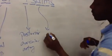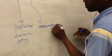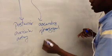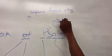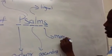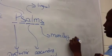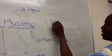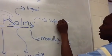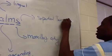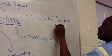A — ascending pharyngeal artery. L — the lingual artery. M — the maxillary artery. And S — the superficial temporal artery.